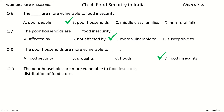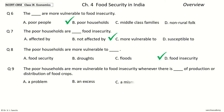Question 9: The poor households are more vulnerable to food insecurity whenever there is Dash of production or distribution of food crops. The options are a problem, an excess, a mismanagement, a corrupt system. Your time to choose. And the answer is a problem.